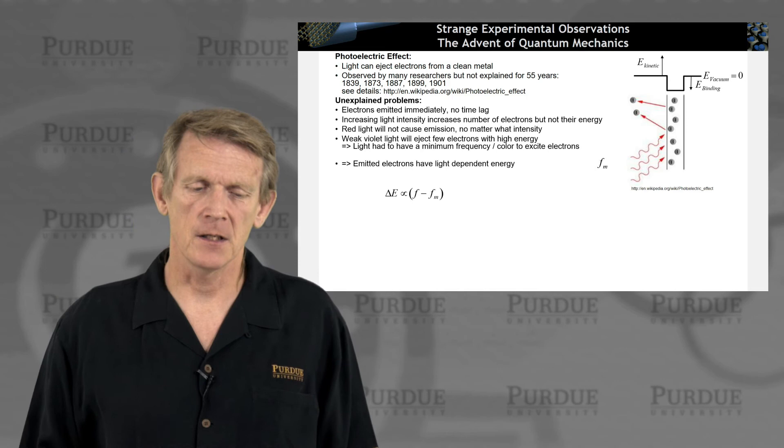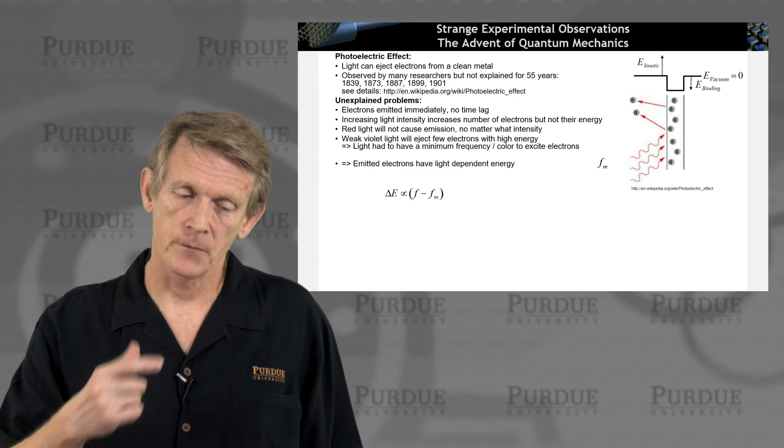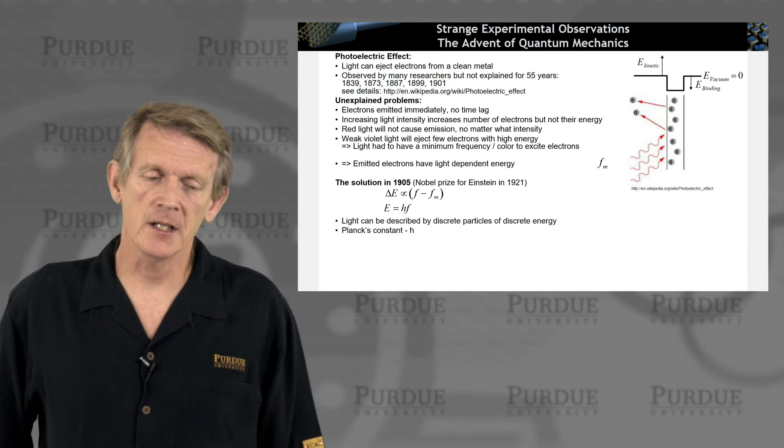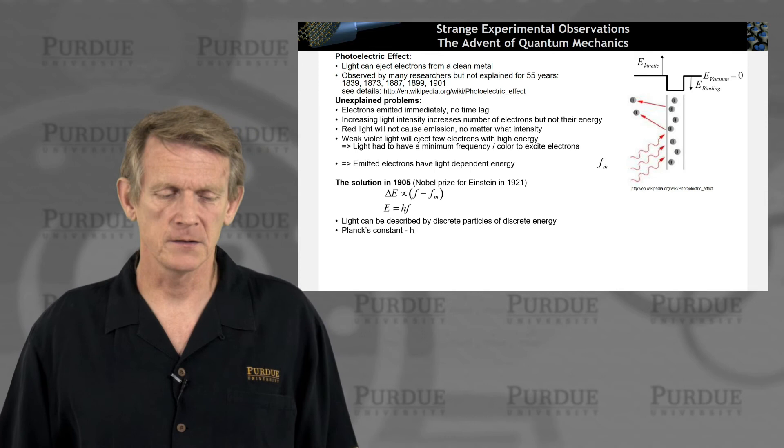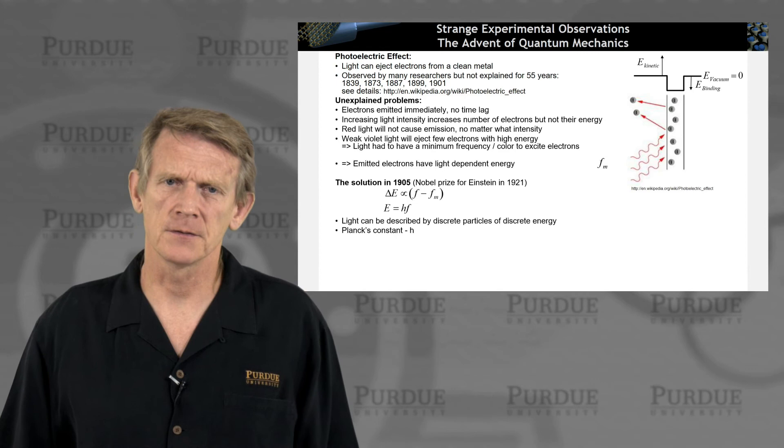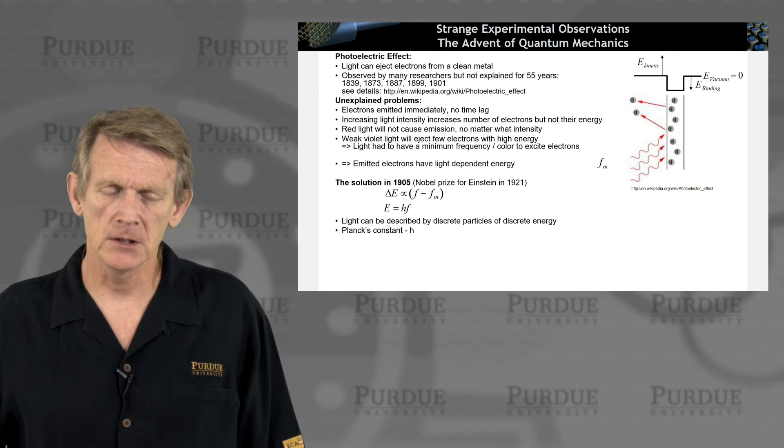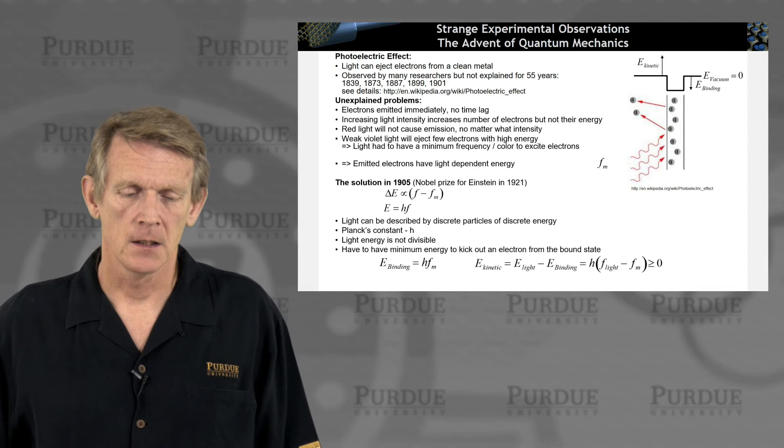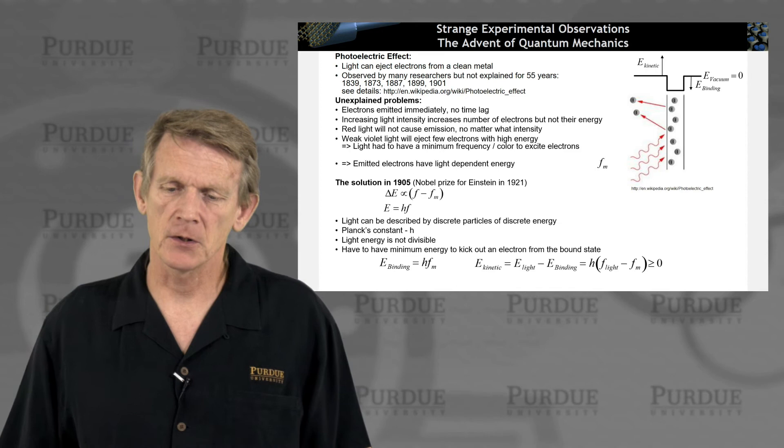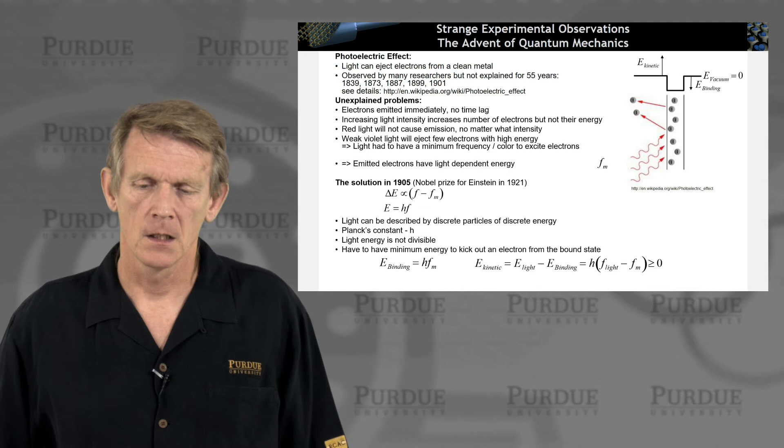All right. That could be fitted to a curve like this. The emitted electrons have a light-dependent energy, and that energy depends on the frequency. And the solution came in 1905, and Einstein got a Nobel Prize for this in 1921. And the essence is that light can be described by discrete particles of discrete energy that are related to Planck's constant. So that relates back to the black body radiation as well.